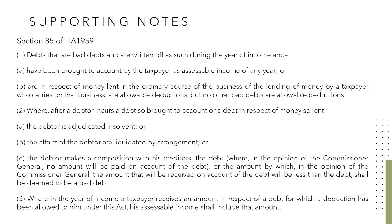If there will be no amount to be paid, then it cannot be claimed. If it is less than the debt, that portion will be claimed — so part of it will be declared a bad debt. Where in the year of income a taxpayer receives an amount in respect of a debt for which a deduction has been allowed under this Act, that amount shall be included in assessable income. In accounting, we call this recovery of accounts written off, and you have to return it back as part of assessable income.